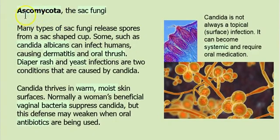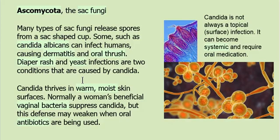A third group: Ascomycota — that means sac fungus — they all form a sac for reproduction. A famous one is Candida, known for causing diaper rash, oral thrush where the tongue gets whitish, and yeast infections. Candida loves warm, moist skin surfaces. That's why sometimes a parent will put the baby out in the backyard on a blanket and let the sun and wind dry their bottom — if you remove the warm, moist environment, Candida doesn't do so well.